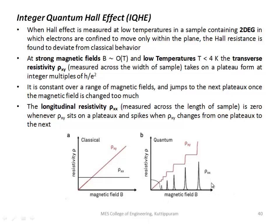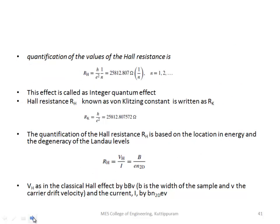This process is integer quantum Hall effect. That hall resistance takes a quantized value. The quantization value of that hall resistance is given as R_H equals h by e square times 1 by N. And that hall resistance, also known as Von Klitzing constant, is given as R_K equals h by e square.